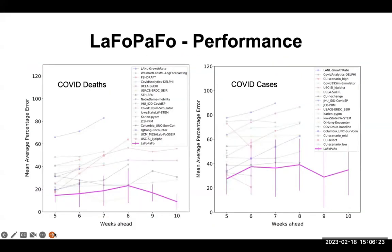When LAFO-PAFO was compared to other COVID models at that time, it basically clobbered them — it was much, much better. Here we're plotting predictions and the error for the number of COVID deaths and cases in the US, with predictions up to 10 weeks ahead on the X axis. To do really well, you want to see low numbers. LAFO-PAFO is marked in dark pink at the bottom, making it basically the best model. Some models had a percentage error of 65–70%, most hovered around 40–50%, and they got progressively worse over time. LAFO-PAFO was the opposite — it actually got better over time — for both COVID cases and deaths.